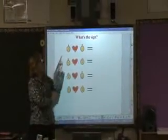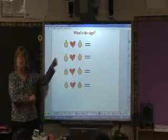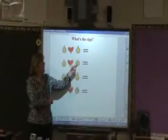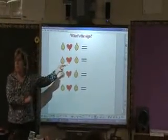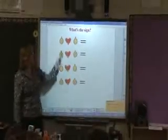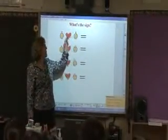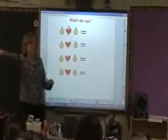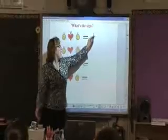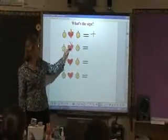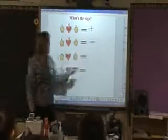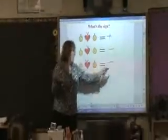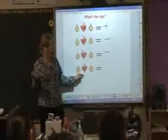Instead of saying happy wife or grouchy husband, we think of happy as positive and grouchy as negative. So: positive times a positive equals a positive. Positive times — or divided by — a negative equals a negative. Negative times a positive is a negative. And a negative times a negative is a positive.